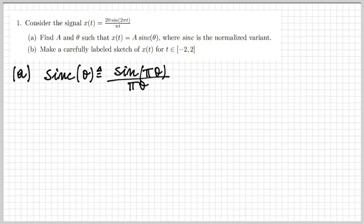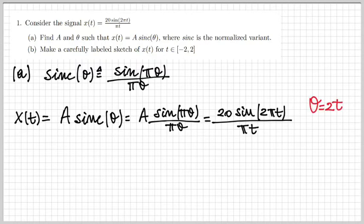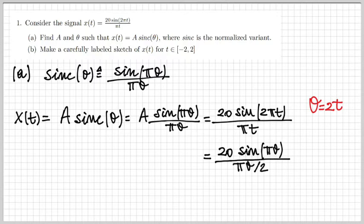We recall the definition of the sinc function: sinc of θ is given by sine of π θ over π θ. So if we want to express x of t in the form a times sinc of θ, we write it as a times sine of π θ over π θ, and we want this to equal the original definition of x of t. We see that the only way for this to happen is when θ is equal to 2t. If we substitute θ equal to 2t, we find the expression 20 sine of π θ over π θ half, and we can see that the value of a is therefore 40 for the equation to hold.